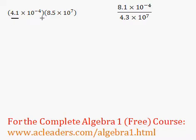So let's start with 4.1 times 8.5, which is equivalent to 34.85.